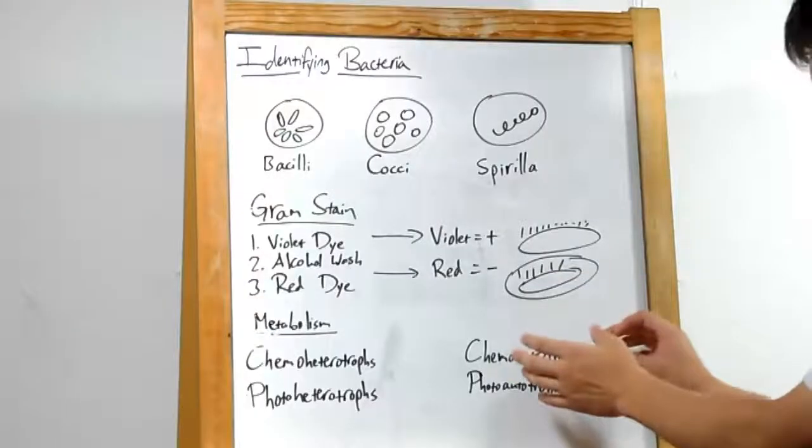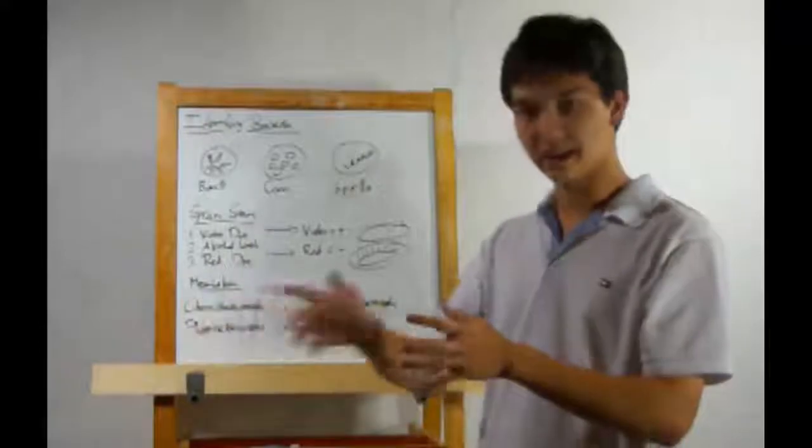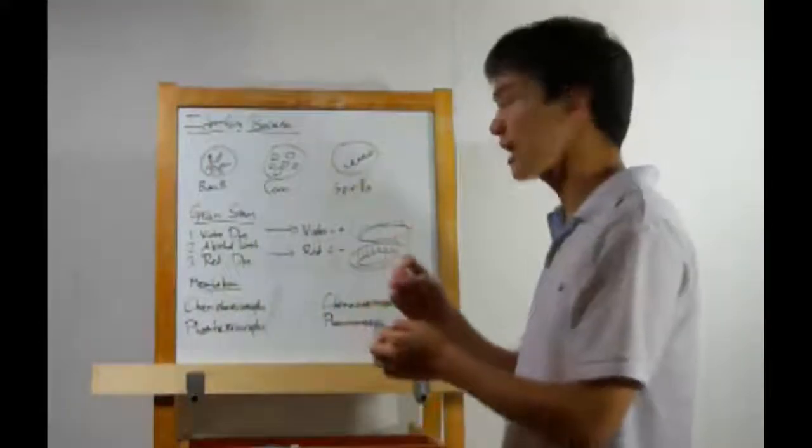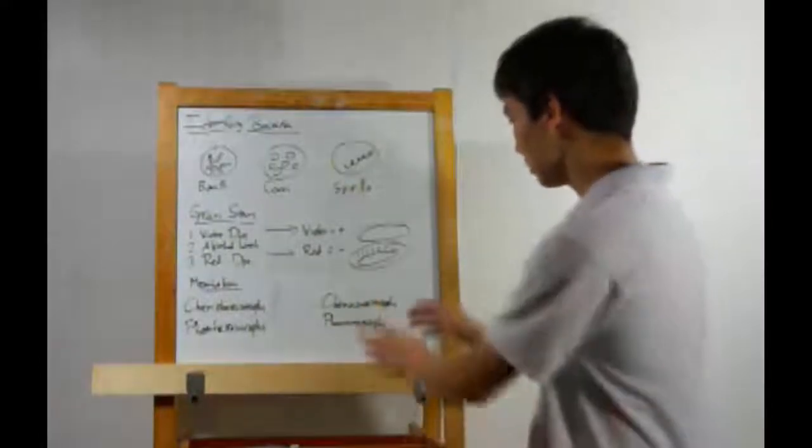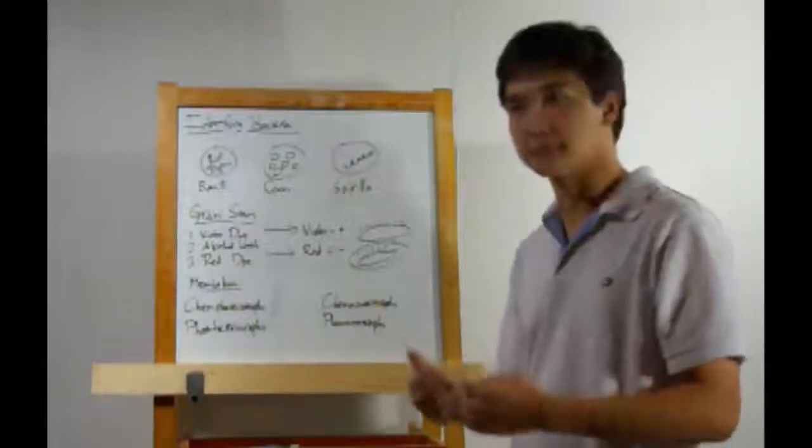Then we have chemoautotrophs. These ones are interesting. They take in organic compounds and then, in a photosynthesis-like process, will actually create their own energy in cell structures. Photoautotrophs, well, they perform photosynthesis a lot like plants.